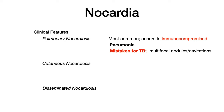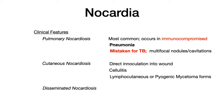There's also cutaneous nocardiosis. What typically happens is that an open wound or pre-existing injury gets inoculated and the bacteria enters that wound. Most often it causes some type of cellulitis. But there are also lymphocutaneous or pyogenic mycetoma forms. If you see local swelling, redness, signs of inflammation, and enlarged or painful lymph nodes typically in the lower extremities, think cutaneous nocardiosis.